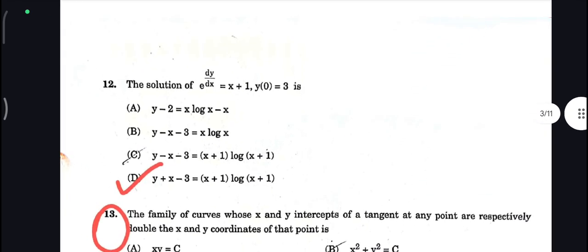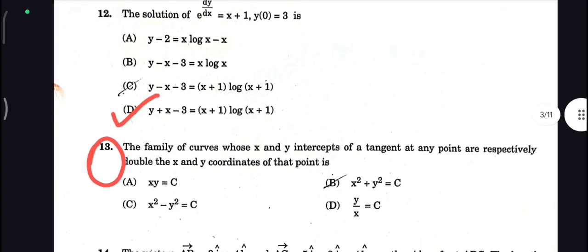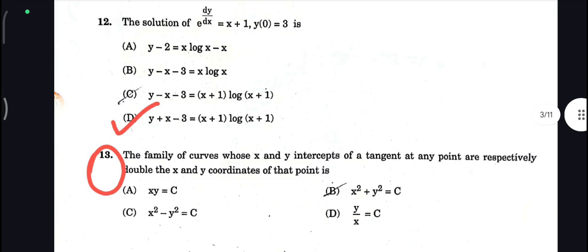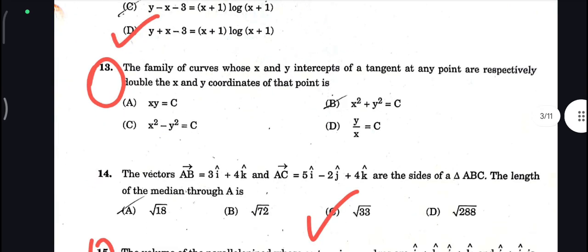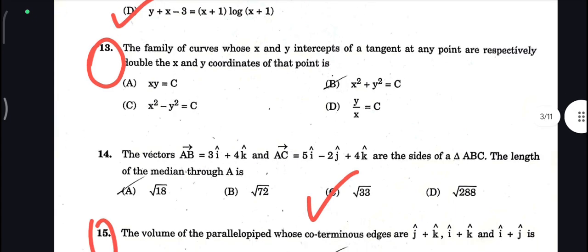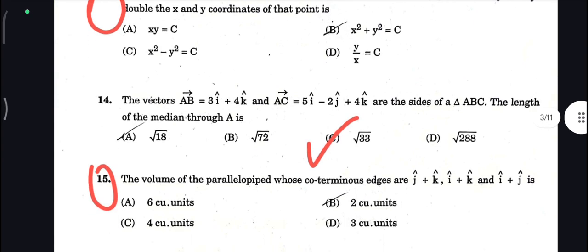Next, the solution of e to the power dy/dx equals x plus 1, y of 0 equals 3. Option D is your correct answer. Some options I have not marked because they were out of syllabus and there's a chance you might get grace marks. Let's wait for the official notification.